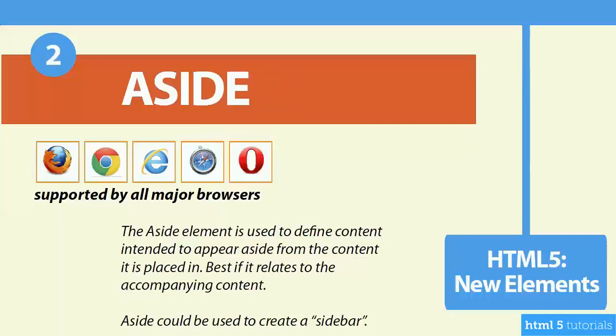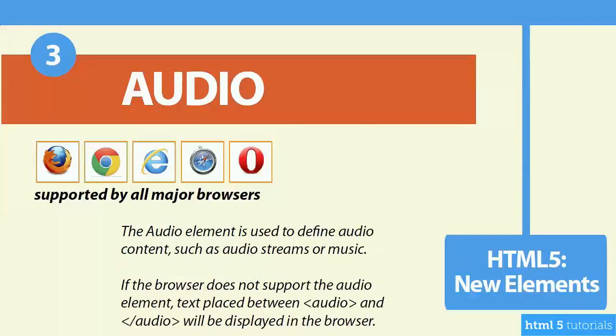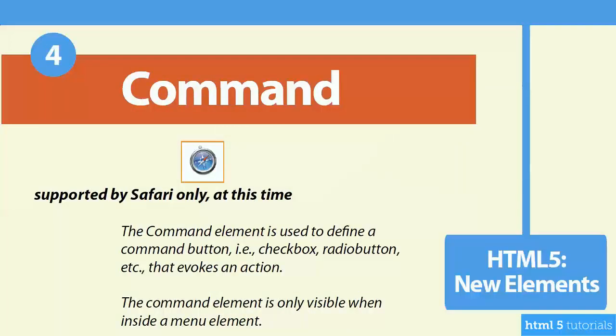The aside tag is one we'll actually be using in our blog project. It's supported by all the major browsers and is used to define content intended to stand on its own in a sidebar. The audio tag is also supported by all the major browsers and is used for audio content such as music or audio streams. The command tag is supported only by Safari at this time and is used for a command button that evokes an action, such as a checkbox or radio button.